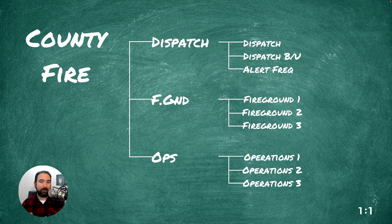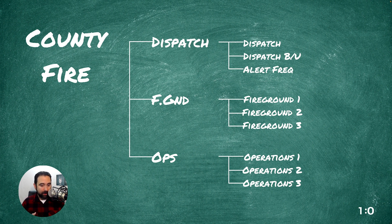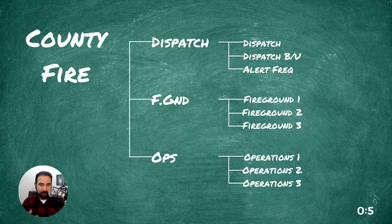Let's change the screen up and label everything. Our system is County Fire. The group is Dispatch. We have another group called Fire Ground, and a third group called Operations, or Ops. Inside each group, we have a frequency that corresponds to that group. So the Dispatch group has all the dispatch frequencies, Fire Ground has all the fire ground frequencies, and Operations has all the operations frequencies.